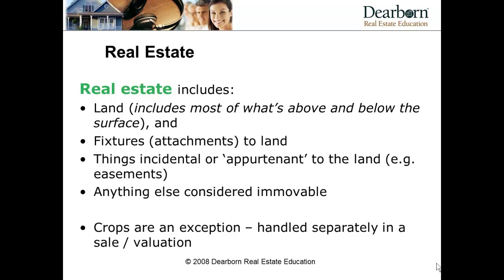The final definition is site — differentiating a site from land. When land is improved by the addition of streets, utilities, water lines, gas lines, electricity, and sewers — those things that make it capable of supporting a building — then the term becomes a site or an improved site. So there is raw land, and then there is a site, which has these utilities ready and in place.